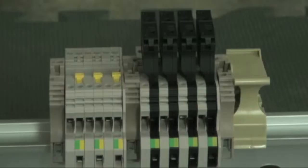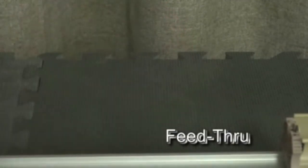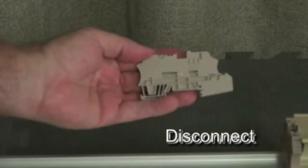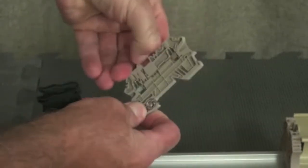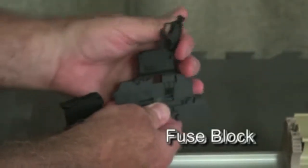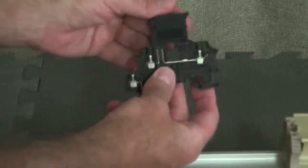The WMF series blocks are available in the following configurations: feed through, disconnect block with integral ground connection with or without STB test sockets, hinged top fuse block with or without indication, and hinged top fuse block with integral ground connection with or without indication.